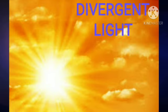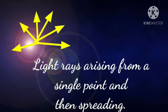Our next term is divergent light. D-I-V-E-R-G-E-N-T divergent. L-I-G-H-D light. Divergent light. Look at the light rays. The light rays are arising from a single point and then spreading. Such light rays are called diverging rays.